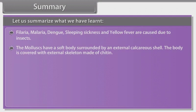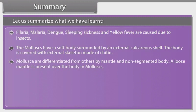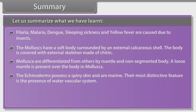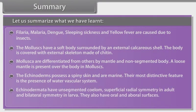Mollusks have a soft body surrounded by an external calcareous shell. The body is covered with an external skeleton made of chitin. Mollusks are differentiated from others by their mantle and non-segmented body, with a loose mantle present over the body. The echinoderms possess spiny skin and are marine. Their most distinctive feature is the presence of a water vascular system. Echinodermata have superficial radial symmetry in adults and bilateral symmetry in larvae, and also have oral and aboral surfaces.